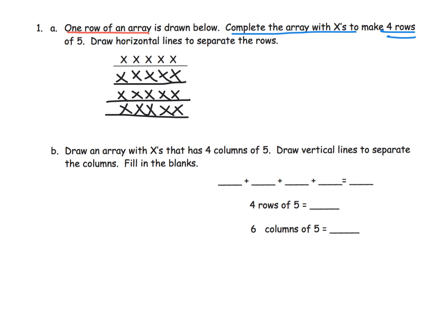Now if we wanted to, we could skip count by rows. This first row has five, the second row has five, and five, and five. With our second graders they could skip count by five: five, ten, fifteen, twenty. So we know that the answer is twenty.